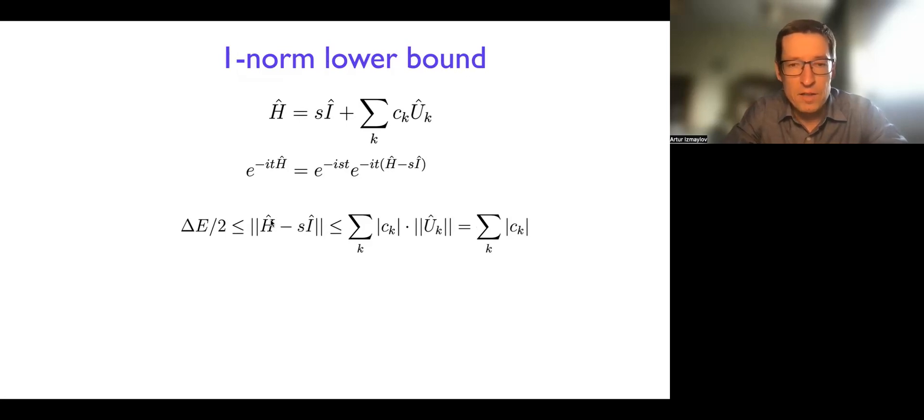And it turns out that this quantity in its turn is always bigger than this delta E divided by two. What delta E divided by two is, is really related to the so-called spectral range of the Hamiltonian. So if you look at the Hamiltonian eigenvalues, they are all between, say, largest and lowest eigenvalues, right? And this delta E is spectral range, as we call it, the difference between largest and lowest.